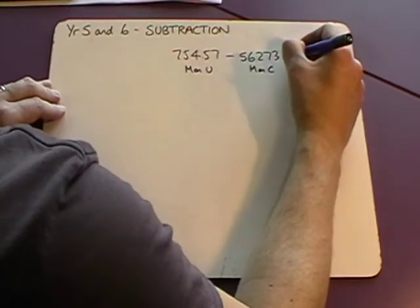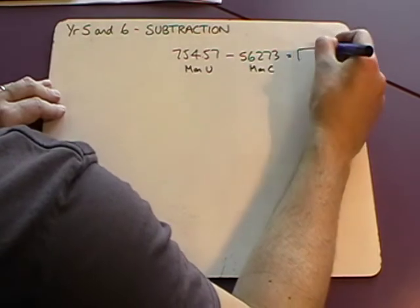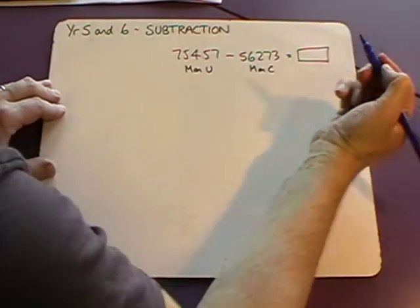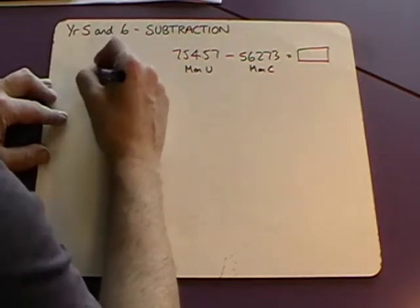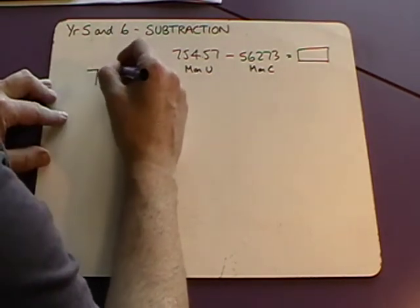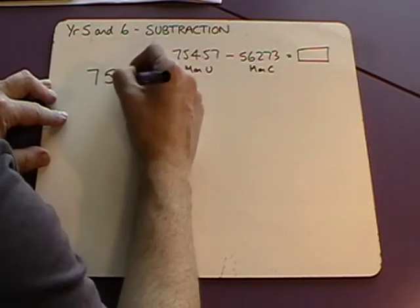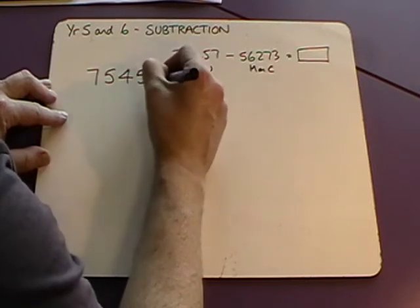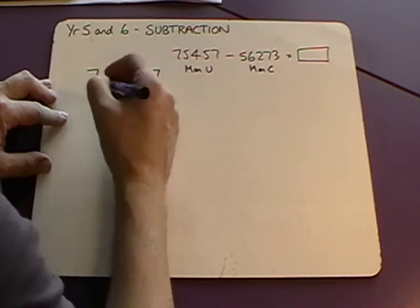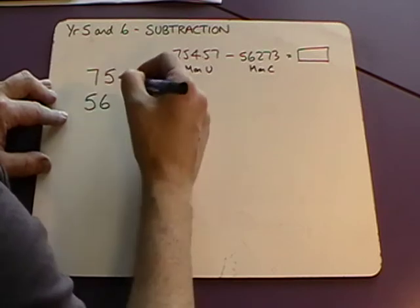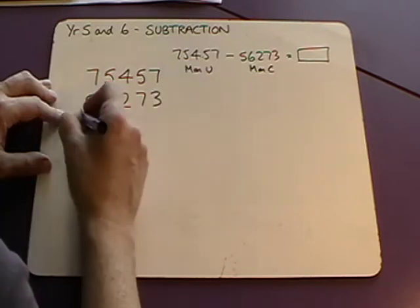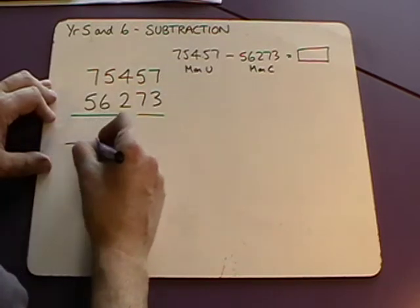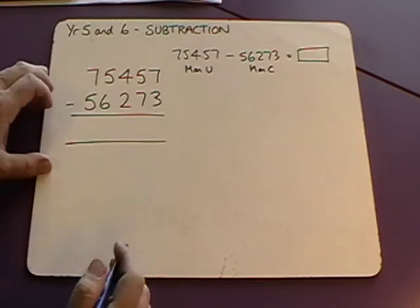So if we subtract we can find the difference between the two and that will tell us how many more Manchester United fans there are. So we can record it as we have been with our column addition, 75,457 and we're going to subtract 56,273. Draw our lines as per usual. Subtraction symbol there.